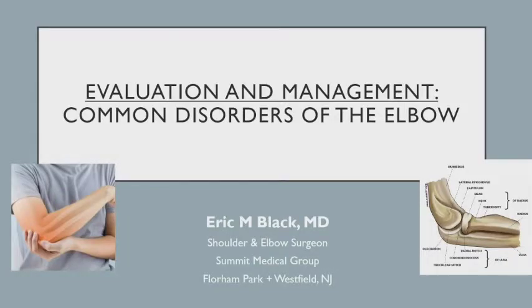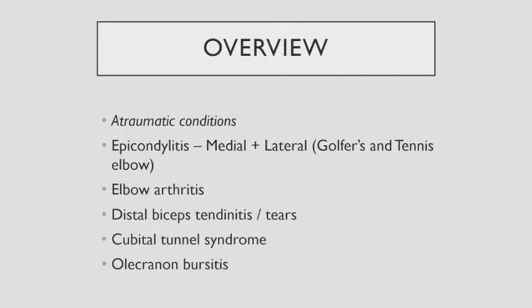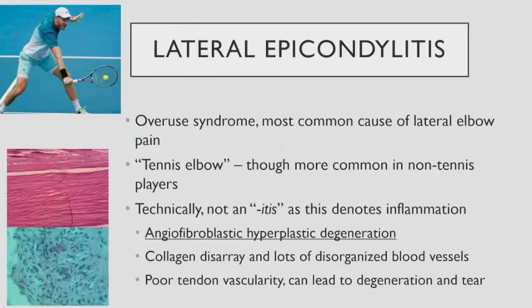We'll talk about common disorders and how we manage them. I'll hit the most common five or six atraumatic things you're going to see — there will be a separate talk on traumatic conditions. The big ones are: epicondylitis, both tennis elbow and golfer's elbow; elbow arthritis; distal biceps tendonitis and distal biceps tears; cubital tunnel syndrome; and olecranon bursitis.